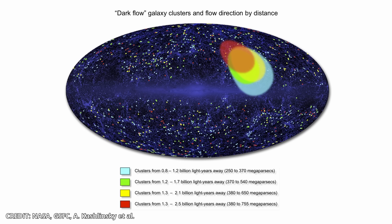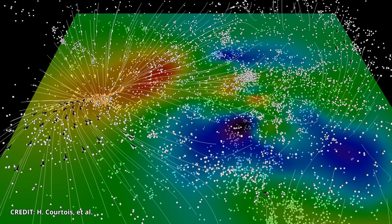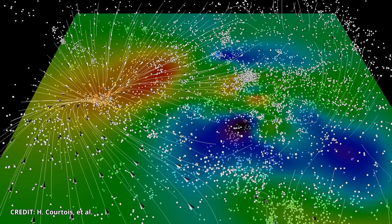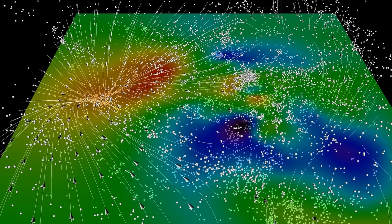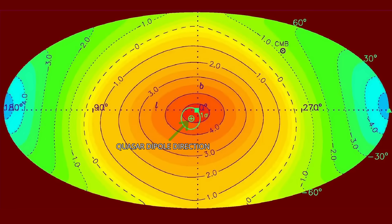Later came the so-called dark flow, a drift of galaxy clusters apparently streaming towards a direction far beyond the observable universe. And across multiple surveys, alignments and preferred axes keep appearing where none should exist in a homogenous isotropic cosmos.